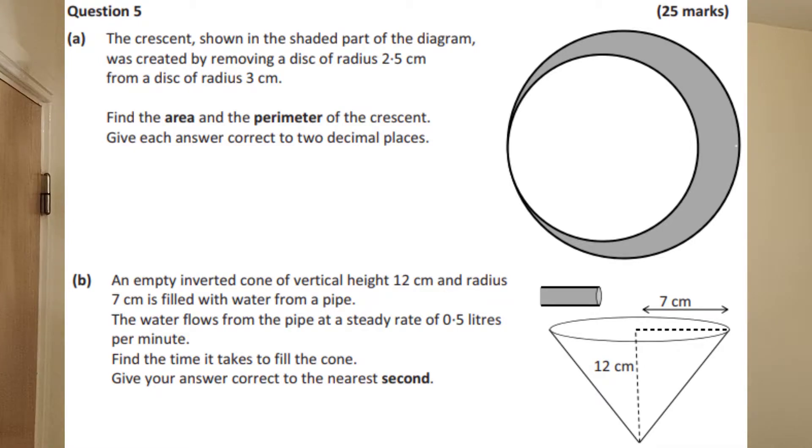This is question 5 of the 2019 Ordinary Level Leaving Cert Paper. You can find a link in the description below that will give you an image of this question if you don't have one readily available. The question is going to be dealing with areas and volumes. Specifically, part A will be dealing with areas of a circle and perimeters, and part B will be dealing with a cone and the volume of a cone.